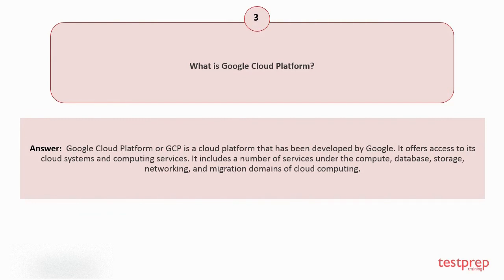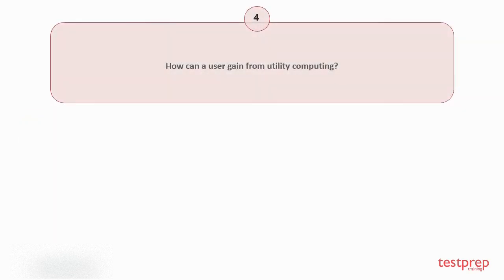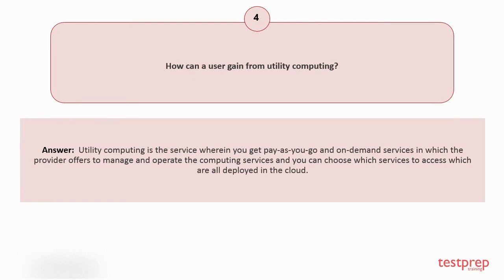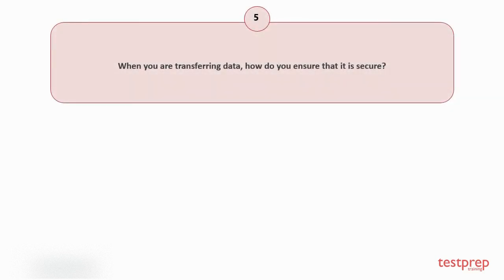Question number four: How can a user gain from utility computing? Utility computing is the service wherein you get pay-as-you-go and on-demand services, in which the provider offers to manage and operate the computing services and you can choose which services to access, all deployed in the cloud.